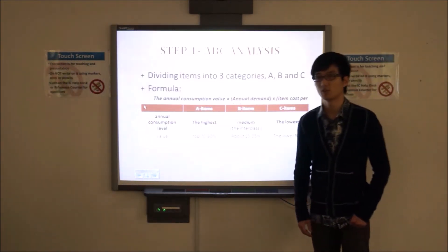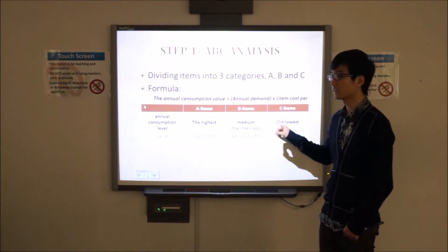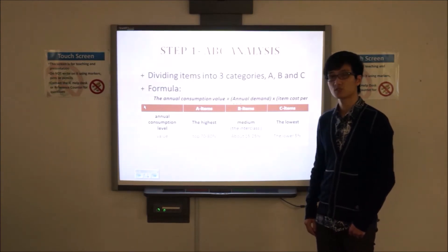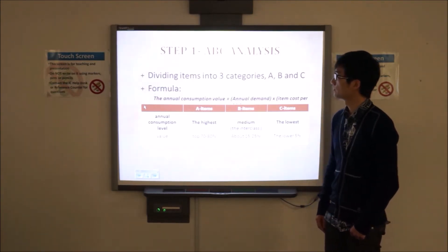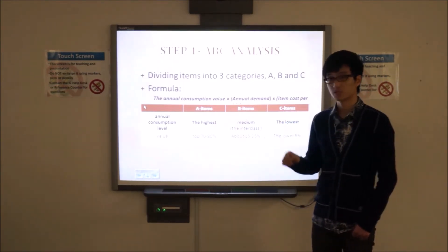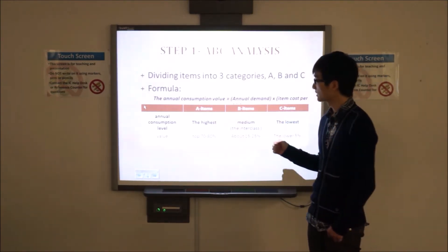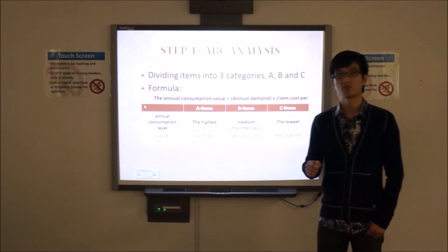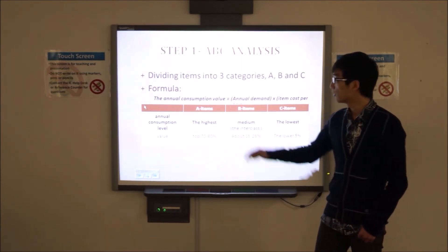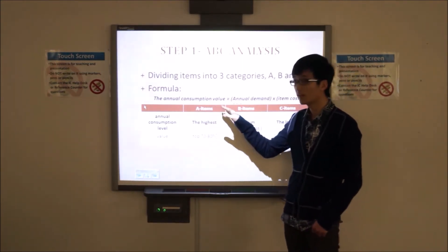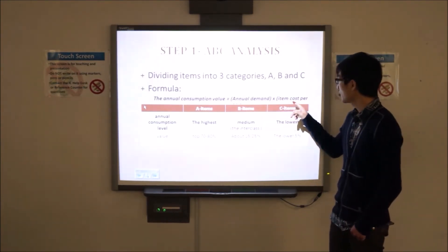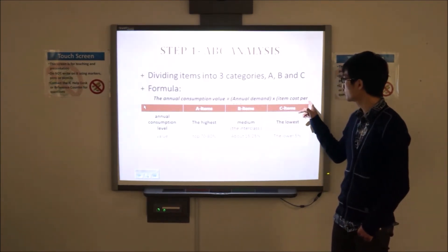Okay, I'll introduce what to store in a dedicated storage. We use ABC analysis to make a decision. All items will be divided into three categories, A, B, and C. Before I give you a first introduction of ABC items, let me first introduce the formula of the annual consumption value, which equals to annual demand multiplied by item cost per unit.